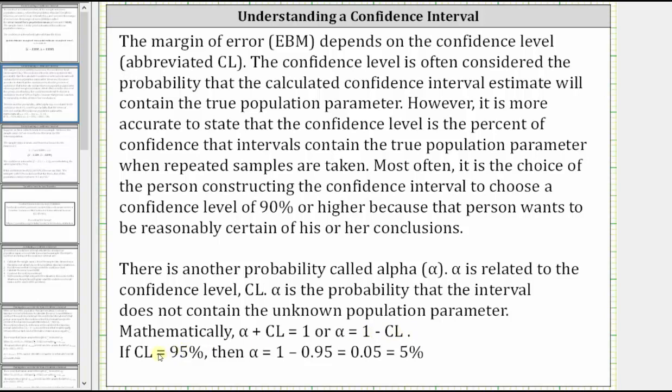If the confidence level is 95%, then α = 1 - 0.95 = 0.05, which equals 5%.